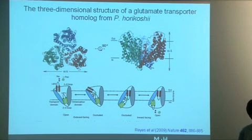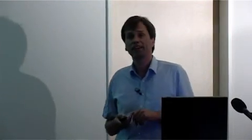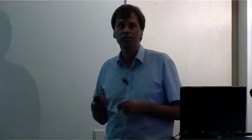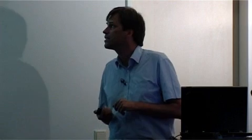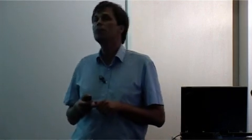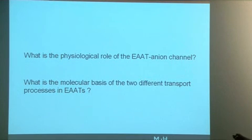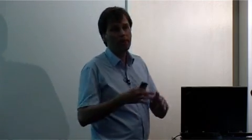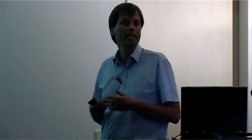Whereas coupled transport is well understood, we know very little about anion transport. Anion transport is, for various reasons, a focus of my laboratory — for my interest in glutamate transport and of course for my interest in anion channels. What I would like to address today are two aspects: what is the physiological role of EAT-anion channels, and what is the molecular basis of these two different transport processes? How is it possible that one protein can make complicated conformational changes to move glutamate, sodium, and proton, and at the same time act as an anion channel?